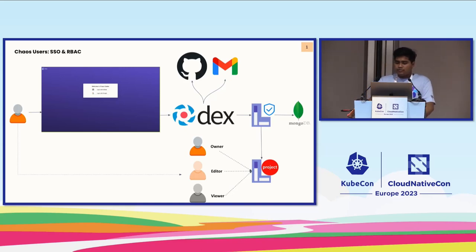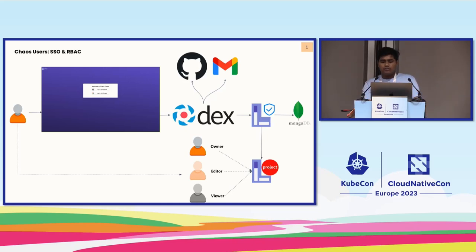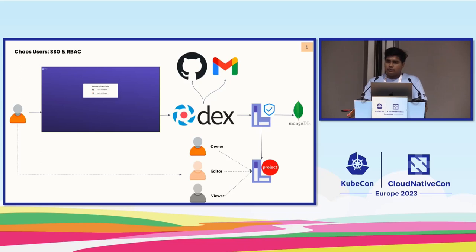Once authenticated, you can see we have a few roles: owner role, editor role, and viewer role. Owner is like an admin — he can do anything like deletion of project, creation of project, inviting users. Editor has a little bit less privilege than the admin — editor can execute the experiment, stop the experiment, and a few other things. And viewer permission is basically only to view the experiment or view the result. All things are under one project — you can create multiple projects. And let's see something with DEX.